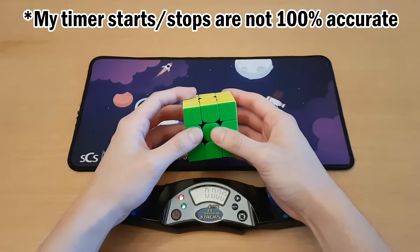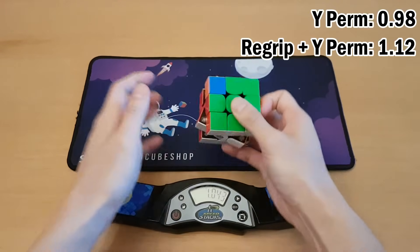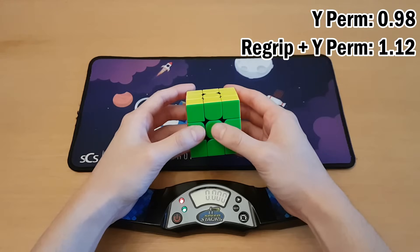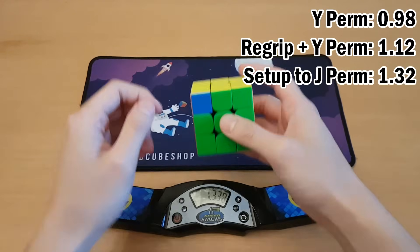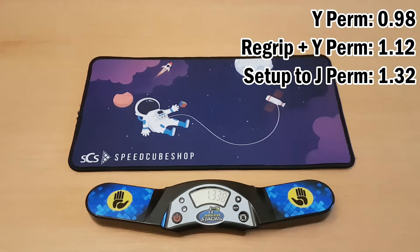I have the standard Y perm, and this time includes the re-grip. And my new awesome Y perm. Of course, I failed again.